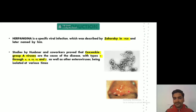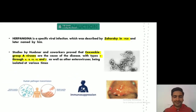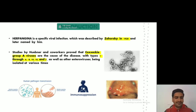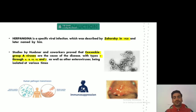Whenever a patient or person is affected by herpangina, you will find fluid-filled vesicles in the oral cavity. We will discuss what happens to these vesicles further in the video. The transmission of this disease is mainly due to direct contact with the virus or the affected person. Immunocompromised persons are also at higher risk.